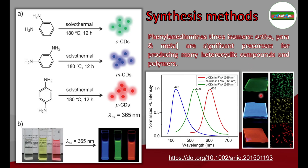This is the PVA film — polyvinyl alcohol film — that has been prepared by adding the carbon dots into the PVA matrix. You can see they still persist their respective fluorescence and have also been utilized in bioimaging applications. What makes the phenylenediamine precursor interesting is that it is well known for producing many heterocyclic compounds and polymers, and polymerization reactions are very important in the hydrothermal synthesis process for the synthesis of carbon dots.